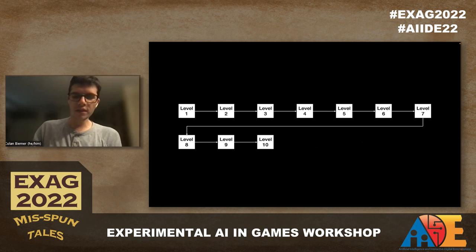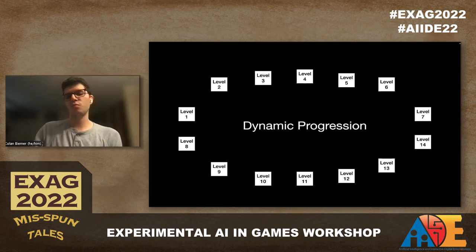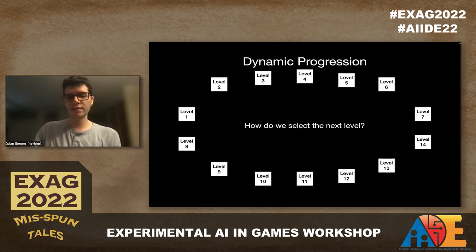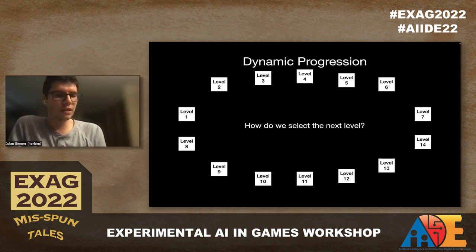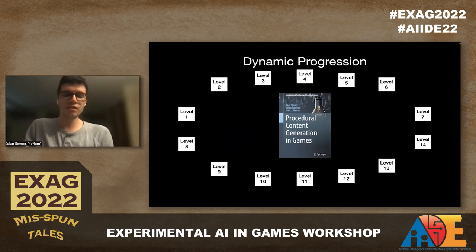So I want to look at how we can try to address this, and one of the answers is dynamic progressions. When we're talking about dynamic progressions, one of the common problems is: how do I select the next level? If there's a mechanic in level 11 that the player hasn't figured out, which level should I select? A lot of work has tried to skirt around that and said, let's use procedural content generation.